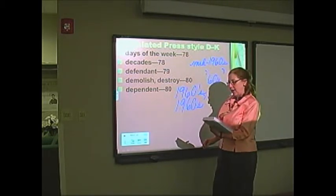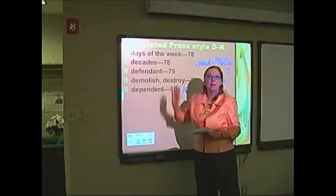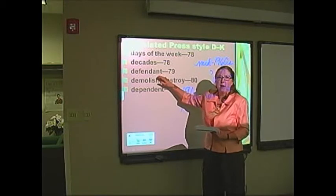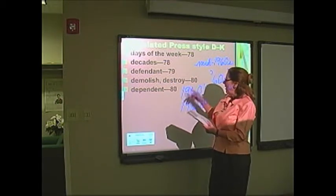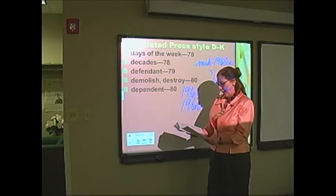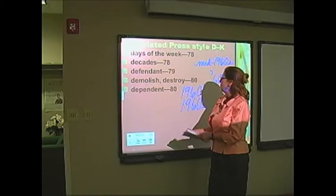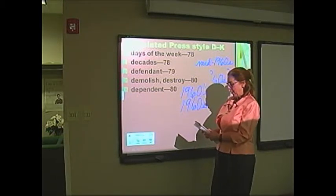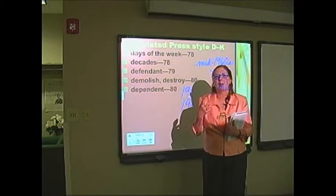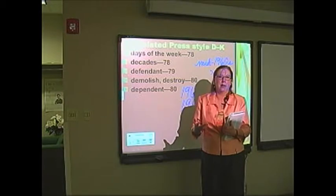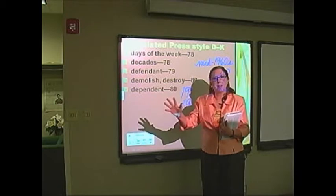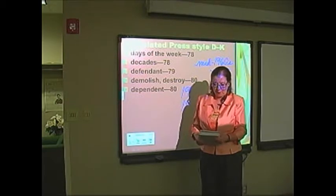On page 79, left-hand column, we have defendant — all we're talking about here is how it's spelled; people usually mess up and put an E and T. Moving to page 80, we have demolish and destroy. It is absolutely redundant to say totally demolished or totally destroyed. If it's demolished, it's gone — so be careful of the redundancy. On the right-hand side of that page is dependent.